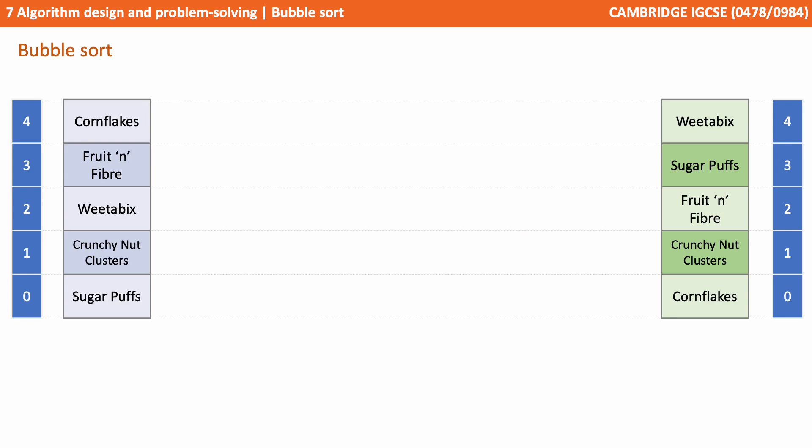So let's work through a simple example. On the left here is our unordered set of items. On the right is the sorted set we want to get to. So we're looking to sort the list on the left into alphabetical order.